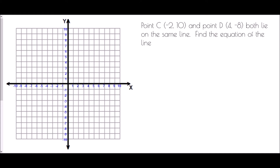Let's try this again with point C being (-2, 10) and point D being (4, -8). Joining those together with a straight line, it looks like the intercept is going to be 4, but let's check it.